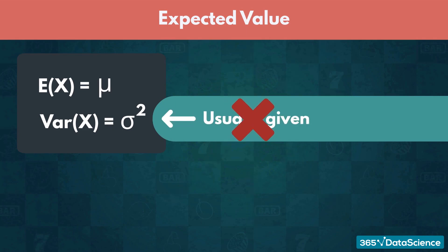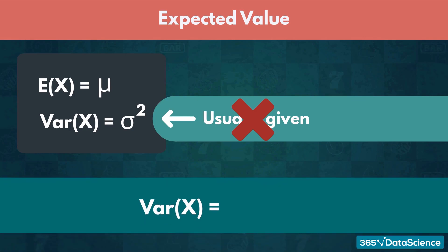However, if it isn't, we can deduce it from the expected value. To do so, we must apply the formula we showed earlier. The variance of a variable is equal to the expected value of the squared variable minus the squared expected value of the variable.